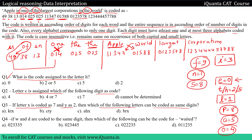Let us come to the word 'corporations'. So I will write it: 1, 2, 3, four times 4, then 5, then double 7 and double 8. These two 8s in 'corporations' will be assigned to P and S. If I come to 7, it appears two times. So which letter repeats two times in 'corporations'? It is R — R will be 7. We can also see that I is in 'corporations' and I was already assigned to 3.